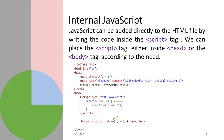The second method is internal JavaScript. JavaScript can be added directly to the HTML file by writing code inside the script tag. In internal JavaScript, we use a script tag, and inside that script tag we write JavaScript code. We can then call that code, method, or function from HTML elements. The script tag can be placed either inside the head or the body tag according to the need.